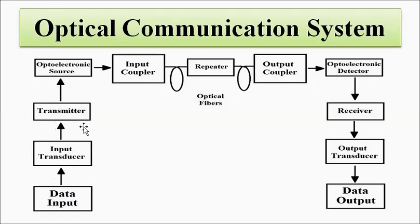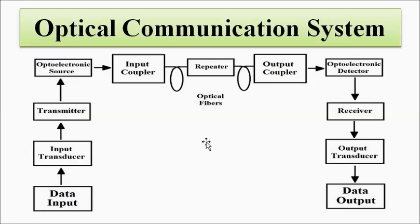Each of these blocks in the optical communication system is a separate unit of optoelectronics — a separate section in optoelectronics. For example, the optoelectronic source, the optoelectronic detector, the optical fiber, the repeater, coupler, and the transducers all form a separate section. The optical fiber is an important part of this optical communication system, and we will discuss all of these sections separately in detail.